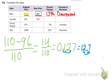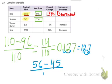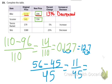On to the scooter. Here's our original, here is our new price. We do change over original, so 56 minus 45, all over our original. We highlighted that—the original is 45. So we get 11 over 45, and 11 divided by 45 is 0.244 something something.